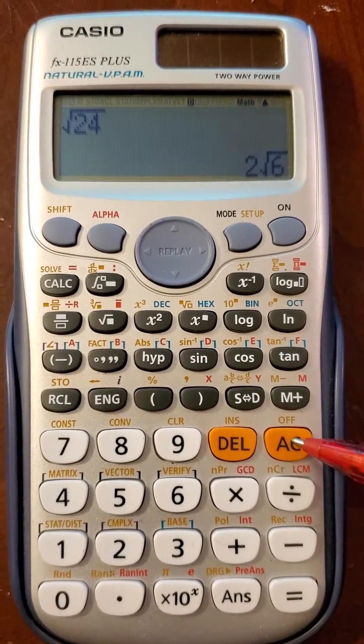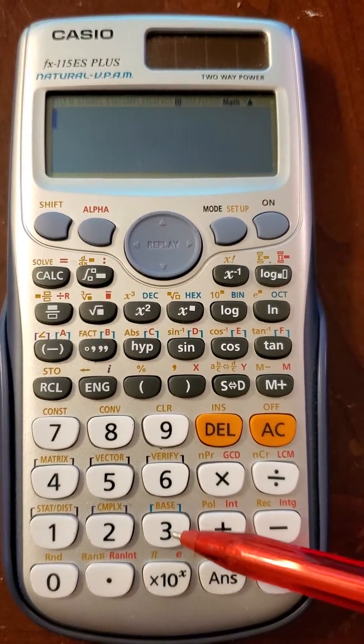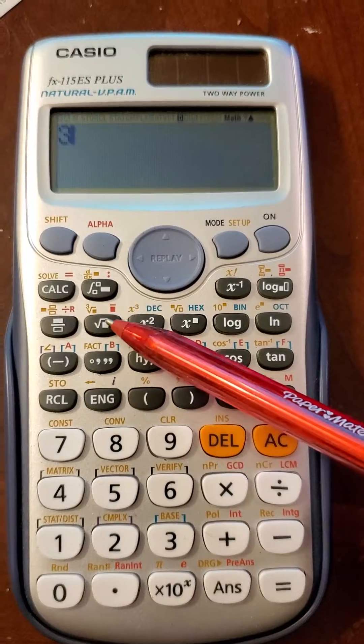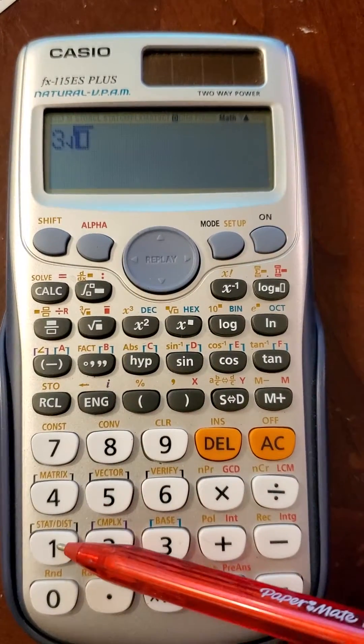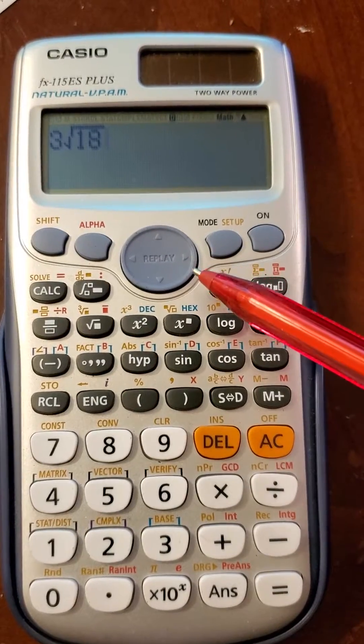And just for one more example to show how freaking awesome this calculator is, let's say that we have 3 square root of 18. We need to move over to get out from under the square root.